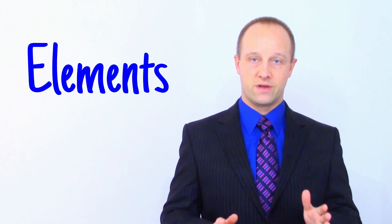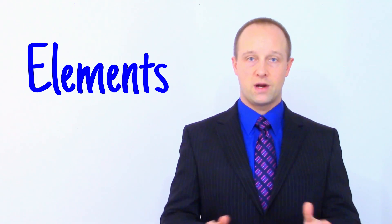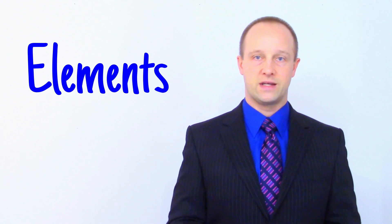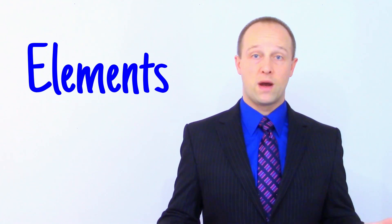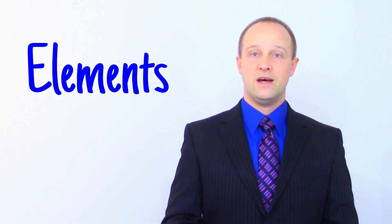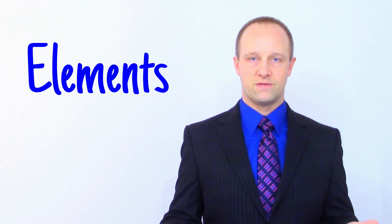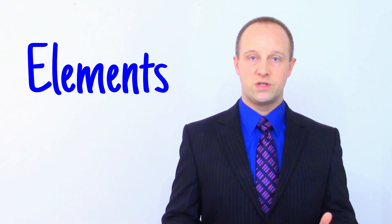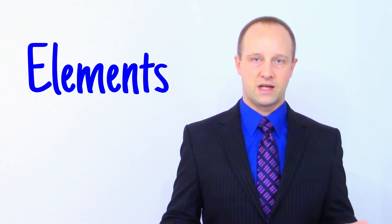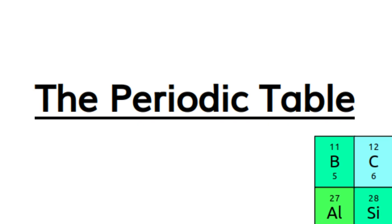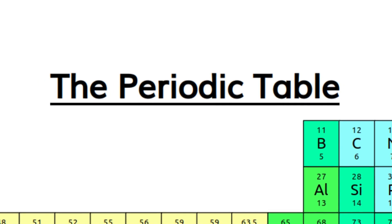Chemists now know that although the Greeks were on the right track, there's actually over 100 different elements that we've been able to identify. Some of them are way more common than others. Some don't even occur naturally and have to be made artificially, and we occasionally even manage to discover new ones. But there's a few really common ones like hydrogen, carbon, oxygen, nitrogen, iron, and so on, which you're going to see all the time.